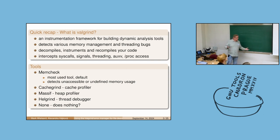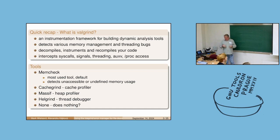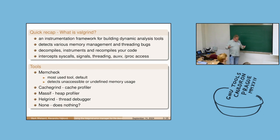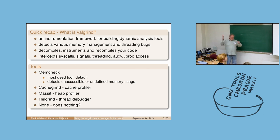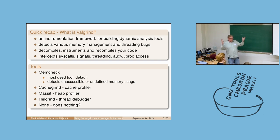Quick recap: Valgrind is a tool for building tools, specifically for building dynamic analysis tools. It currently detects various memory management and threading bugs. The whole idea of Valgrind tools is that it captures your whole program, translates it into an intermediate representation, instruments that representation, and then compiles it back. So it's kind of a JIT that works on CPU code.